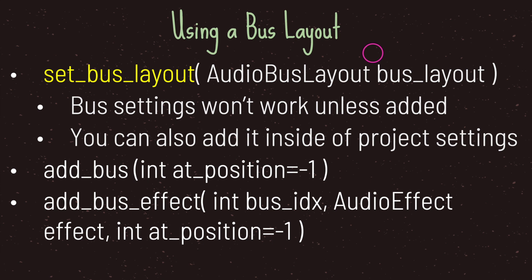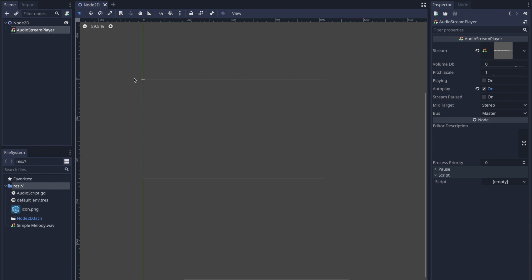Customized bus settings will not work unless manually added, because the audio server singleton defaults to whatever is set in your project settings. You are also given two useful methods: the add_bus method, which takes an optional argument and appends to an array, and the add_bus_effect method, which takes two mandatory arguments — the first being a bus index and the second being an AudioEffect data type. I will provide a link to the Godot engine documentation for more details.